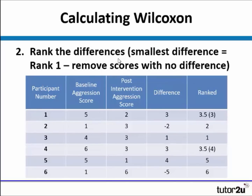The next step is to rank the differences. As with all inferential statistics, this is quite an important step. We look for the smallest number, which is 1, so that gets rank 1. Then we have a 2 — it doesn't matter that it's a minus number — so it gets rank 2. We then have two 3s, which would get ranks 3 and 4, so we give them an equal ranking of 3.5. Then we have 5 and 6.